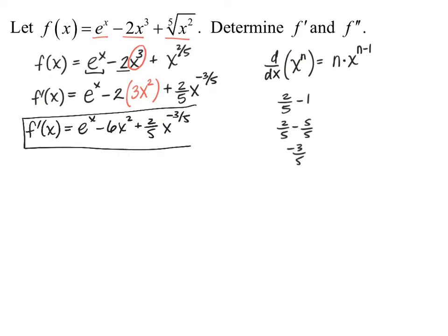Now we use our first derivative to find our second derivative — we're just taking the derivative of the first derivative. It's still in good form with three terms, so we compute the derivative of each term individually again. Our first term is e to the x, whose derivative is simply e to the x. Our second term has a coefficient of negative six, a constant multiple, so we multiply that by the derivative of x squared, which is 2x.